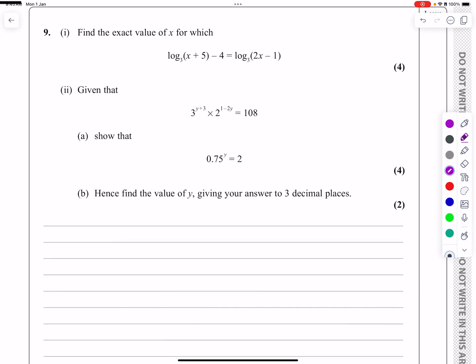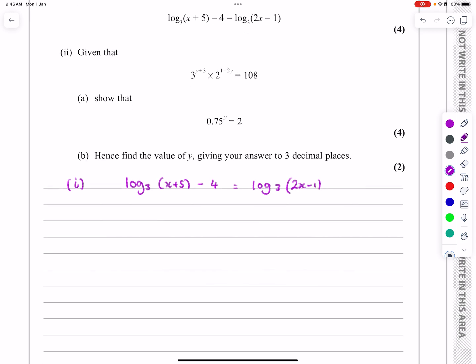So part 1 says, find the exact value of x for which 2 log₃(x+5) - 4 = log₃(2x-1). There's two separate ways of doing this. I'll do both ways, but I'll only leave one on the actual answer. The first thing to do is look at this 4 and see if I can write that as log to the base 3. What we need to understand is that log_A(A) is always equal to 1. So I'm going to do log₃(3), and write log₃(x+5) minus 4 log₃(3) = log₃(2x-1).